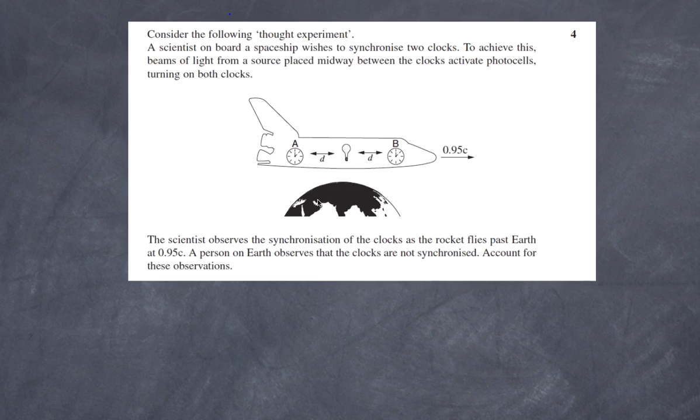Here's the question. It talks about a thought experiment. Basically you have a spacecraft over here, and a light source releases a light pulse and travels to clock A and clock B.